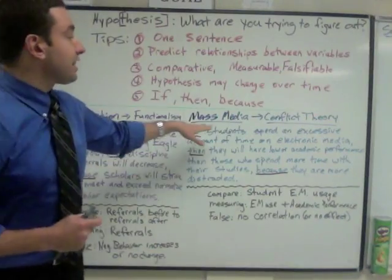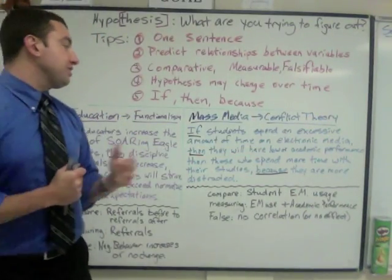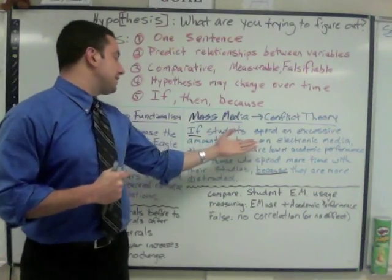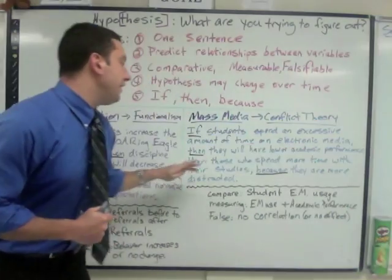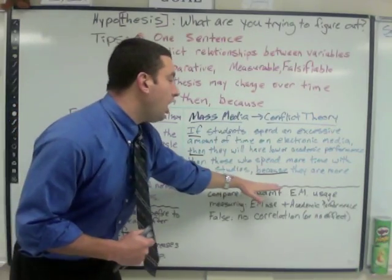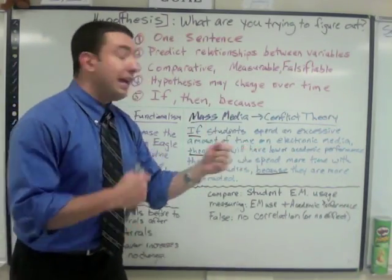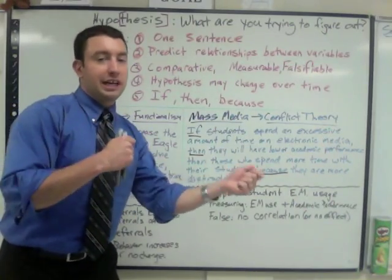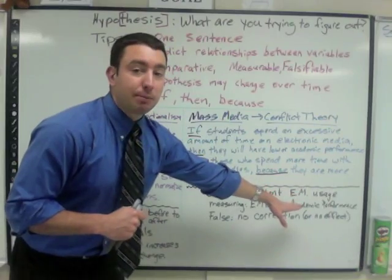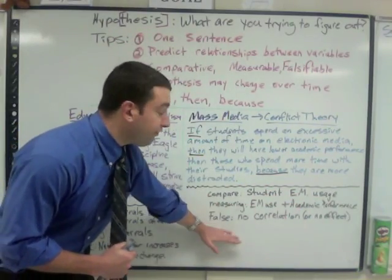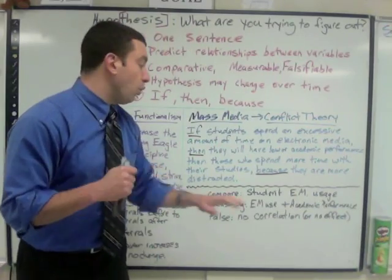Here's another example, looking at the mass media example related to conflict theory. The hypothesis says: If students spend an excessive amount of time on electronic media, then they will have lower academic performance than students who spend more time with their studies, because they are more distracted. You're comparing students and their electronic media use — students that use more vs. less, students that study more vs. less. You're measuring electronic media usage and academic performance, and it's false if there's no correlation between the two variables.